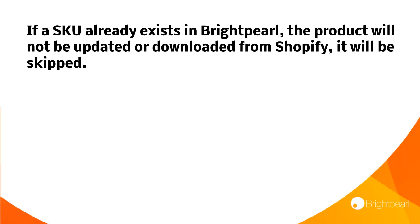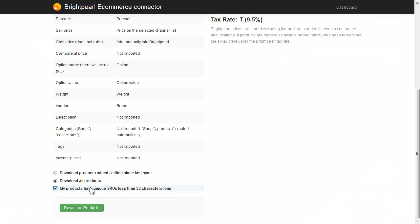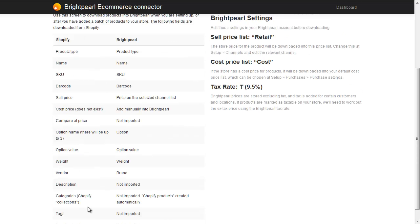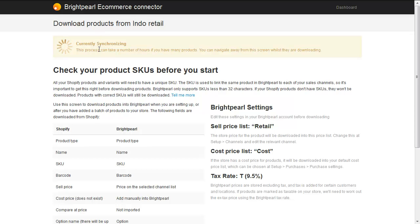If a SKU already exists in Brightpearl when you're downloading from Shopify, that item will be skipped — it won't be updated or downloaded into Brightpearl again. So if you want to make sure your Shopify store has unique SKUs, now is the time before you download products into Brightpearl. If you're not sure, we have a Shopify data checker to check your Shopify products. Once that's all done, click Download Products.